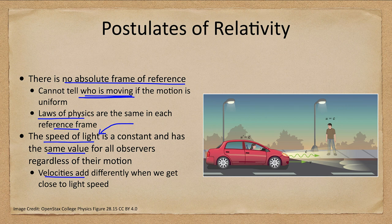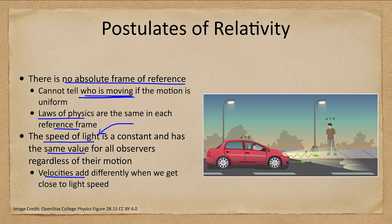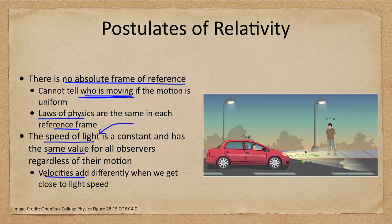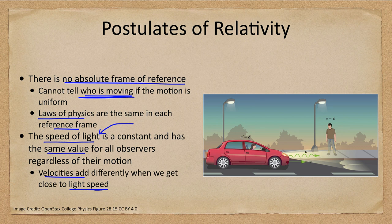A light beam shining ahead of a fast-moving car or spaceship is still traveling at exactly the speed of light. You cannot add in the motion of the craft. If you had a spaceship moving at half the speed of light, the light would still move ahead at just the speed of light, not 1.5 times the speed of light. You can never exceed that speed.